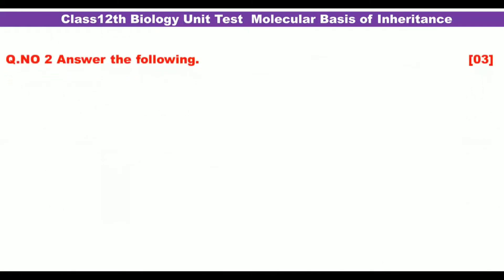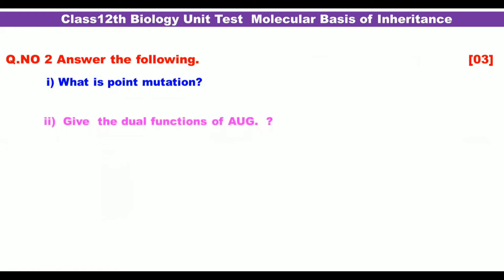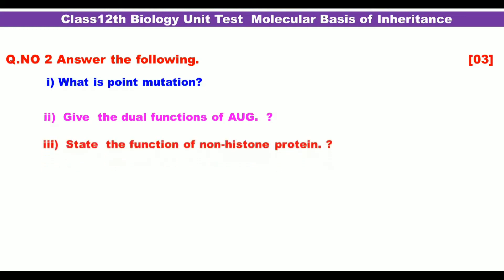Question number 2, Section A: Answer the following questions in one sentence. First: What is a point mutation? Second: What is the dual function of AUG? Third: State the function of non-histone proteins. Each question carries half a mark.